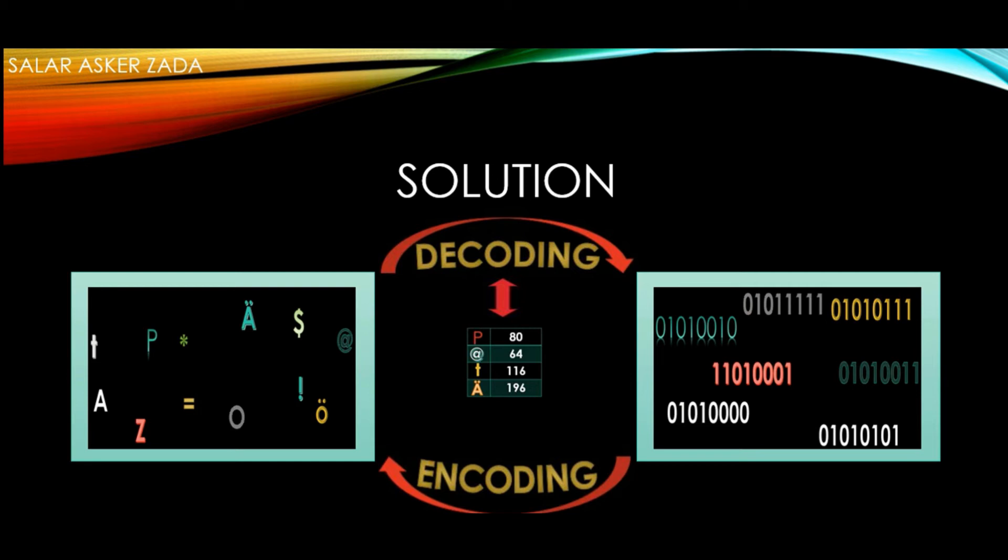For example, if you want to send uppercase letter P for processing, the computer decoding system receives it first. Then the computer decoding system makes a request to the ASCII table and asks for the decimal code for P. The ASCII table returns number 80 to the decoding system. And finally, the decoding system converts 80 into binary and then sends it to the computer for processing.